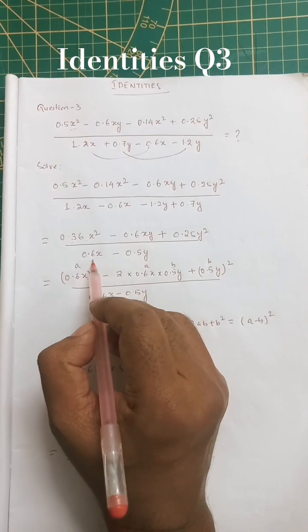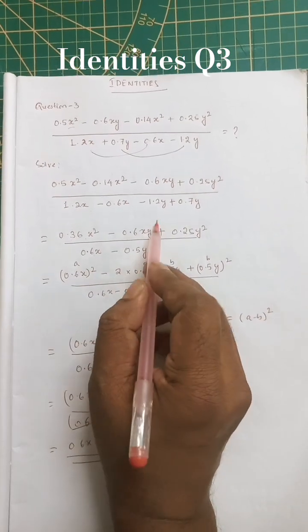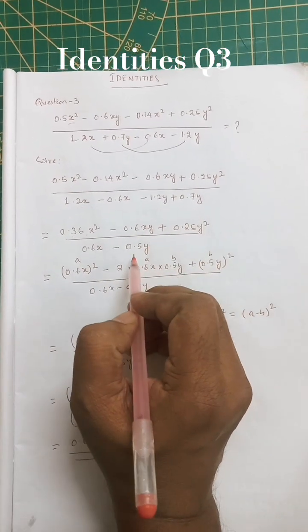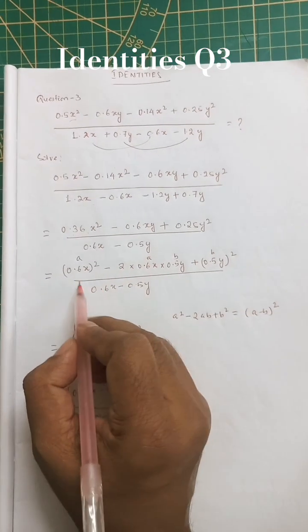That simplifies to 0.6 x minus 1.2 y plus 0.7 y, which is 0.5 y.